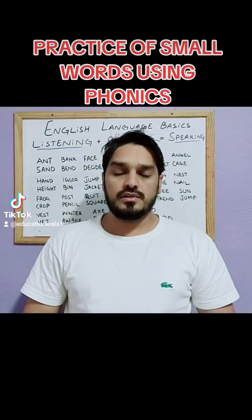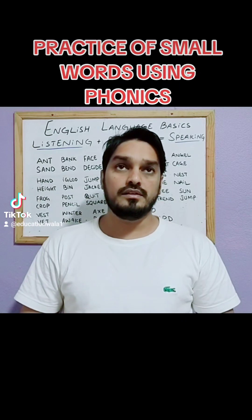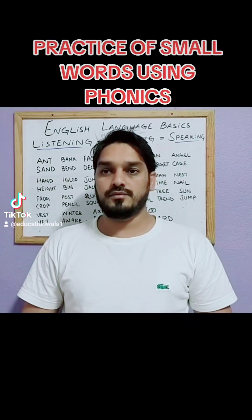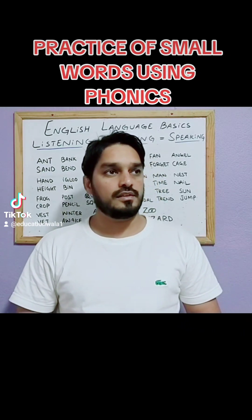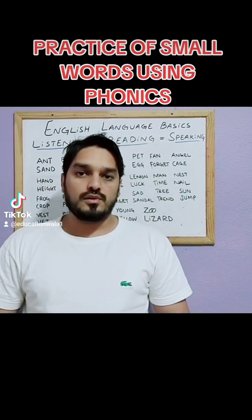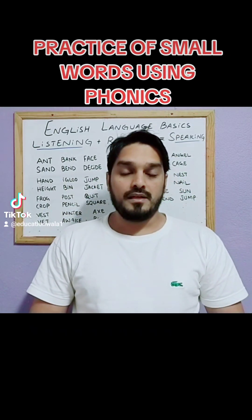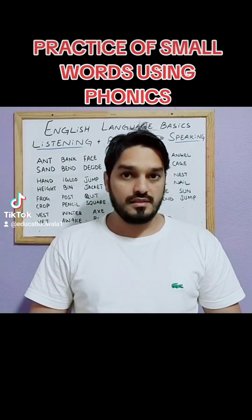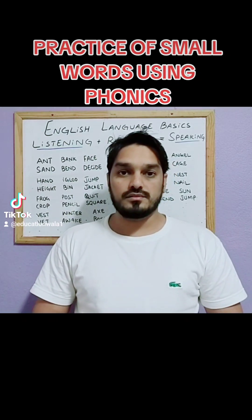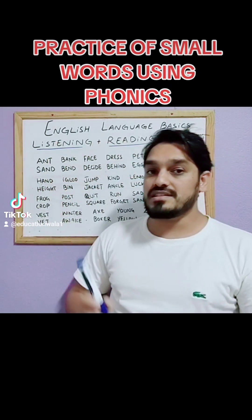Once upon a time there was a crow. He was very thirsty. He flew here and there in search of water but he couldn't find any water. That's the English way — this is an English language basic course.